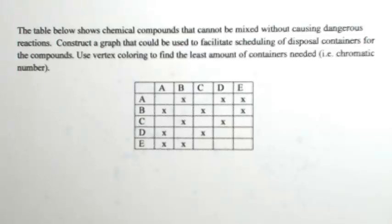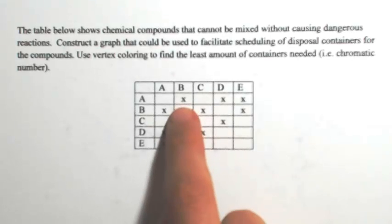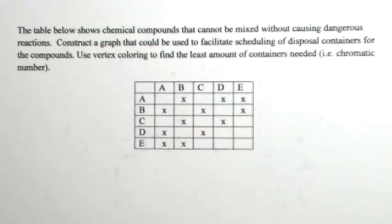So the first thing we're going to do is construct a graph that shows which compounds cannot be mixed together. Anything with an X indicates that you cannot put those together. So the first thing I'll do is just list out all the different compounds, which there's five of them. Here the graph doesn't need to look pretty, just put them down somewhere.